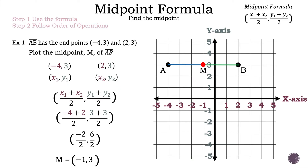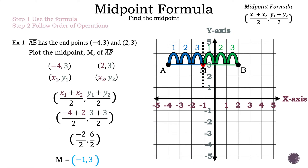Now let's show why that is the case. We divide segment AB in half at point M and count from point A to point M — that's 1, 2, 3 — so 3 spaces. Then from point M to point B — 1, 2, 3 — also 3 spaces. So point M is in the middle of segment AB, and negative 1, 3 is the midpoint.